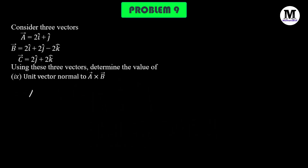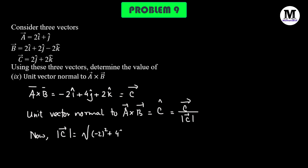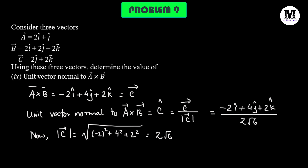Problem number 9: here we need to find out the unit vector normal to A vector cross B vector. We already found that A cross B equals negative 2i cap plus 4j cap plus 2k cap. Let this be equal to another vector C. The unit vector normal to A cross B is simply C cap, which is C vector divided by the magnitude of vector C. The magnitude of vector C is square root of negative 2 squared plus 4 squared plus 2 squared, which gives us 2 times square root of 6. So C cap equals 1 over square root of 6 multiplied by negative i cap plus 2j cap plus k cap.